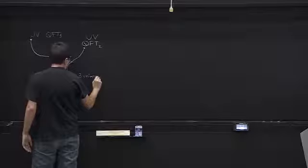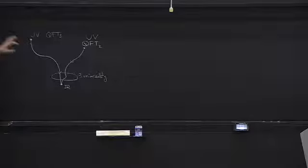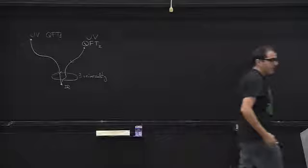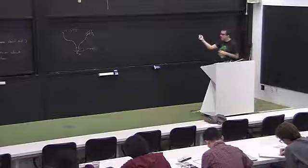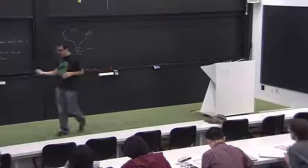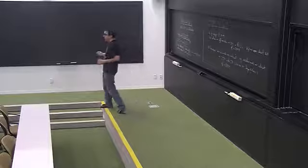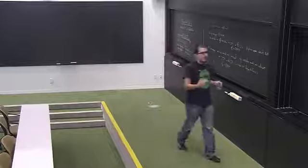For example, the 3D Ising model — a spin system in three dimensions with spins up and down interacting with nearest neighbors — is in the same universality class as the water liquid–gas critical phase transition. The phase transition of water has correlation functions with the same critical exponents as the 3D Ising model. So studying conformal field theories is extremely important: it teaches us about universal features of quantum field theories.